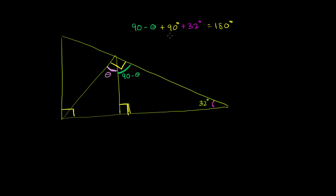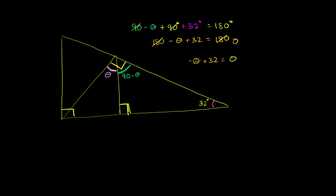Let's simplify. 90 plus 90 is 180, so you get 180 minus theta plus 32 is equal to 180 degrees. We have 180 on both sides, so that cancels out. Then you have negative theta plus 32 degrees is equal to 0. Add theta to both sides, and you get 32 degrees is equal to theta — theta is equal to 32 degrees.